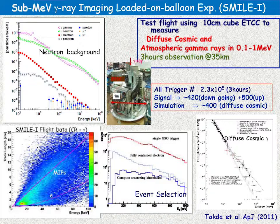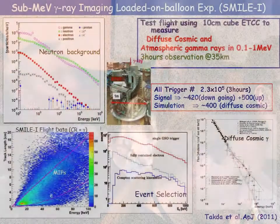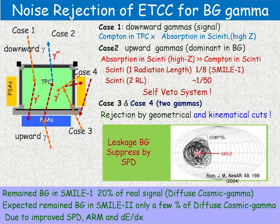Our Compton camera data — those are data taken at the float altitude, 35 kilometers — show that the number of events is quite similar to the expected number of cosmic diffuse gamma rays and atmospheric gamma-ray events. Therefore, we detected diffuse cosmic rays, and the data are quite consistent with previous data. Now we summarize the noise direction of the electron tracking camera.